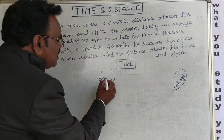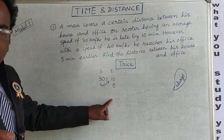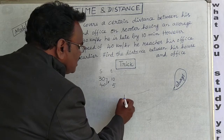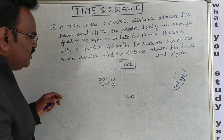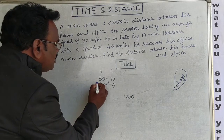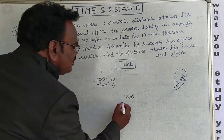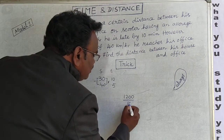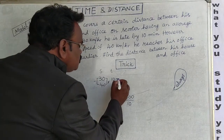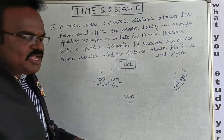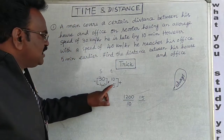First, multiply the two speeds: 30 × 40 = 1200. Then subtract the smaller time from the larger: 10 − 5 = 5. Wait — from the larger value subtract the lesser, that gives 10. Then add the two times: 10 + 5 = 15.